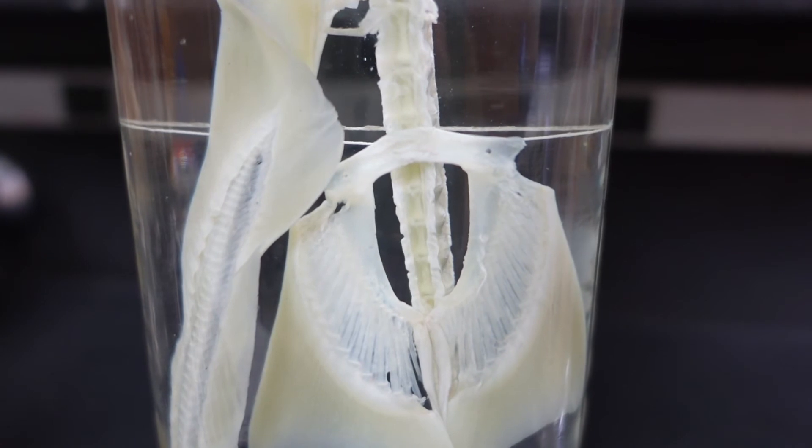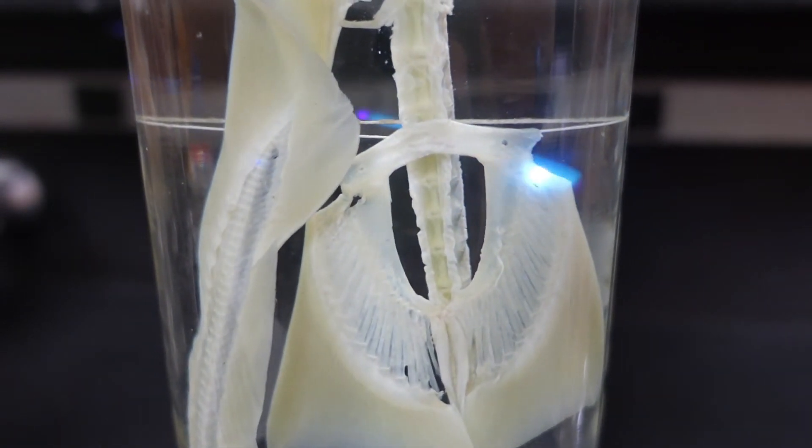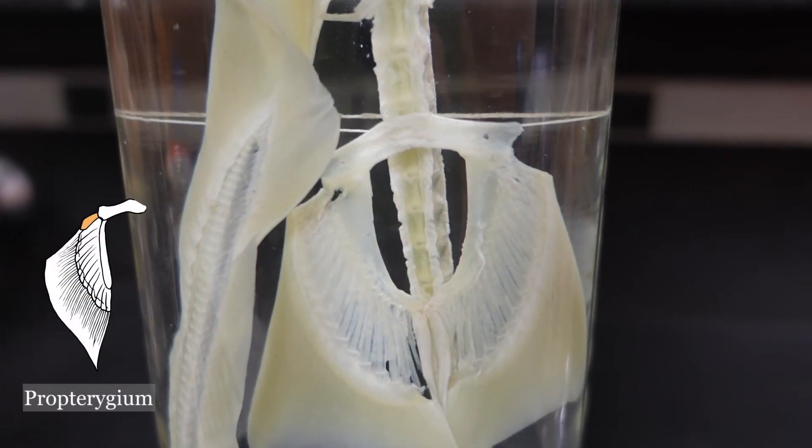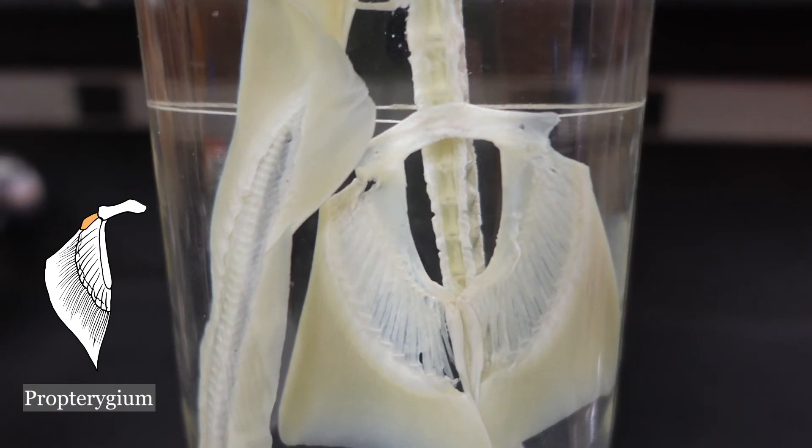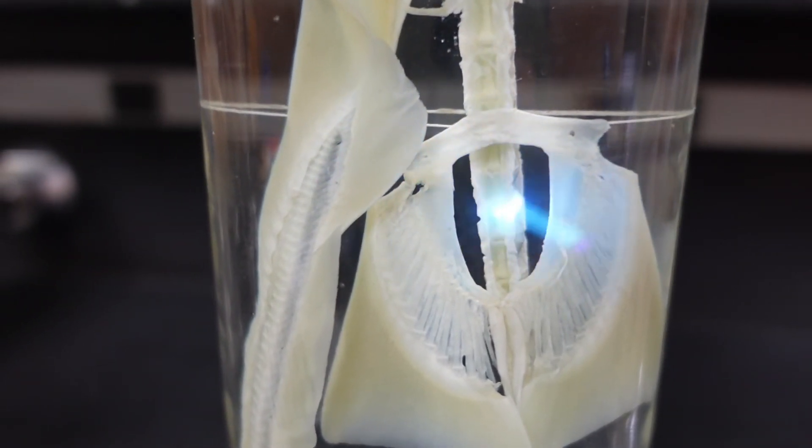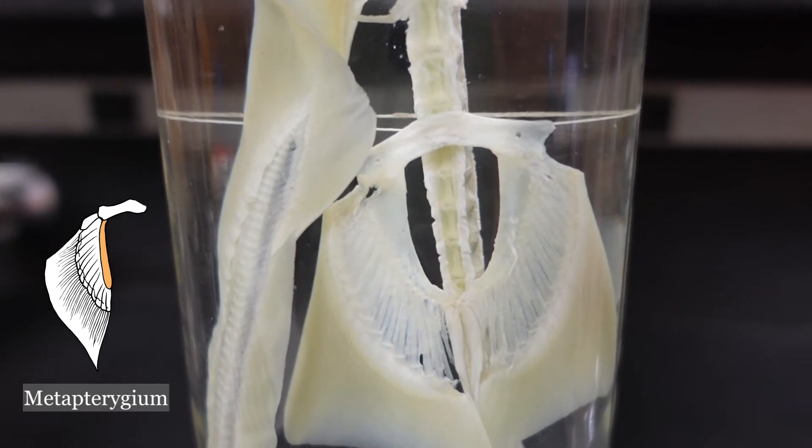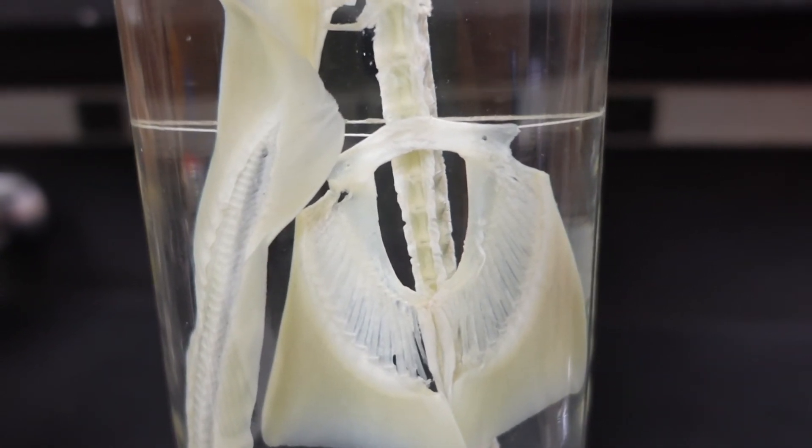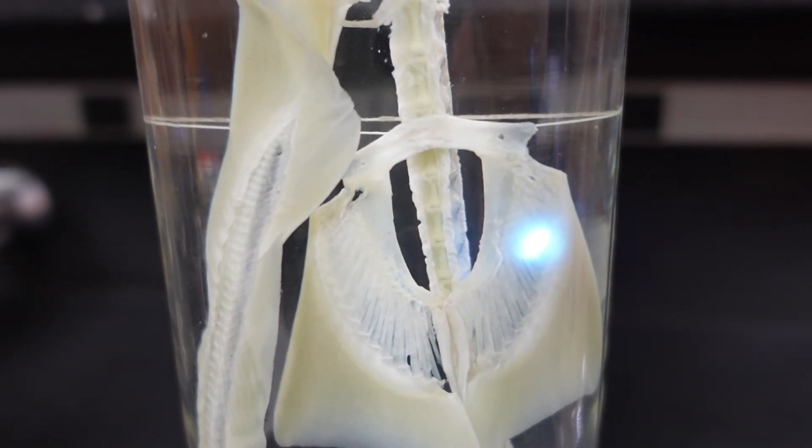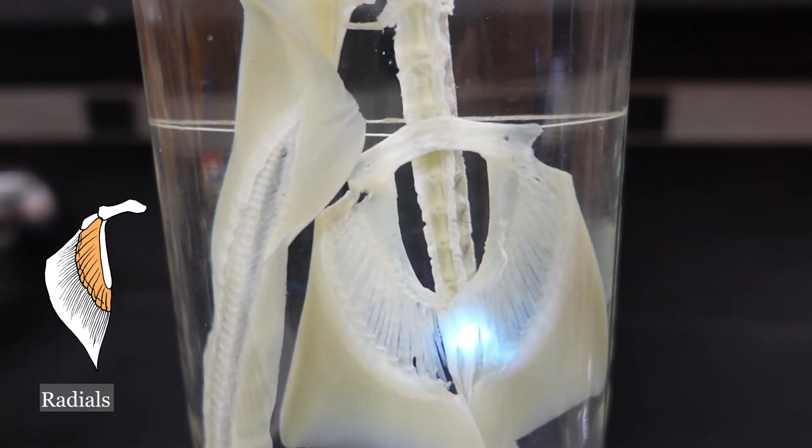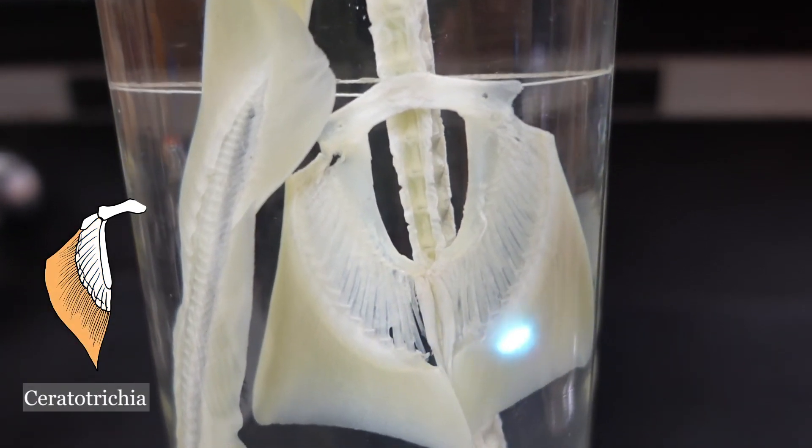There are two large cartilages in the pelvic fin. This one here is the propterygium, probably familiar from the pectoral fin, and then the metapterygium. Notice there is no mesopterygium in the pelvic fin. But similar to the pectoral fin, we have radials right through here and then the fin rays of the ceratotrichia.